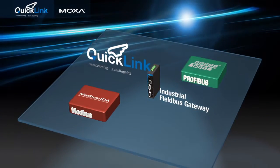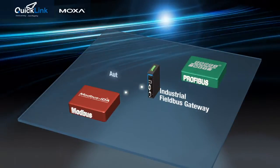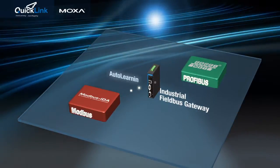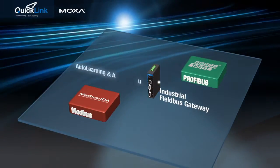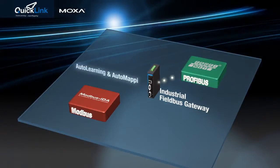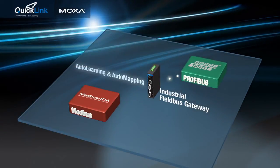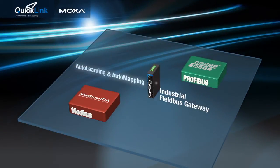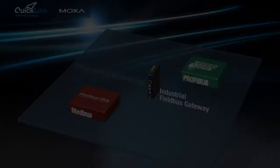To simplify gateway configuration, Moxa introduces an advanced technology, QuickLink, with intelligent auto-learning and auto-mapping capabilities to effortlessly configure the gateway, eliminating tedious and time-consuming methods of traditional gateway configuration.